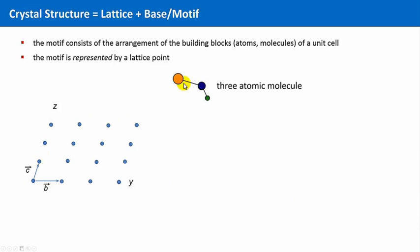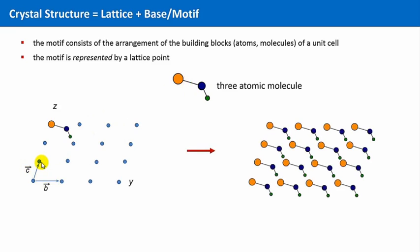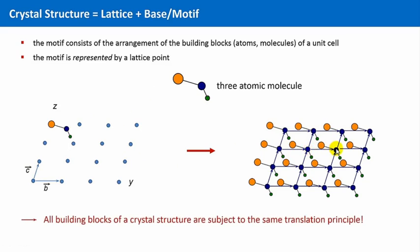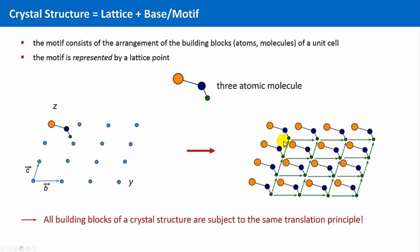Let's take, for instance, this three-atomic molecule and apply the translational principle. Then we get this crystal. We see that the orange atoms are translated by this orange lattice, and this must also be the case for the blue atoms. All building blocks of a crystal structure are subject to the same translational principle.